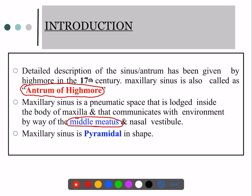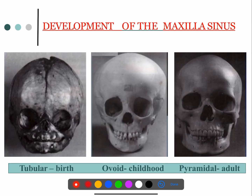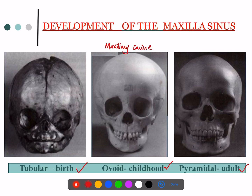A regularly asked question is the shape of the maxillary sinus. The normal adult shape is pyramidal. During development it has different shapes: at birth it is tubular, in childhood it is ovoid, and in adults it is pyramidal. They can also ask which tooth is nearest to the maxillary sinus during development — that is the maxillary canine. But in the adult, the answer is the maxillary first molar.